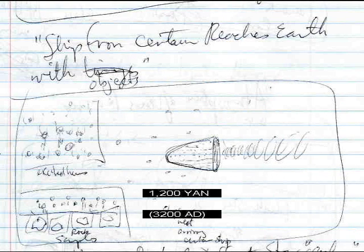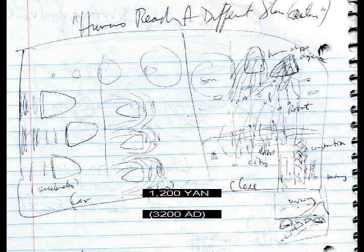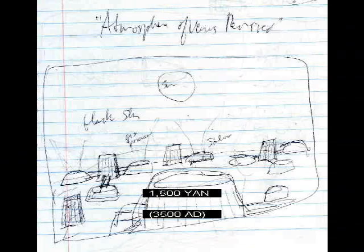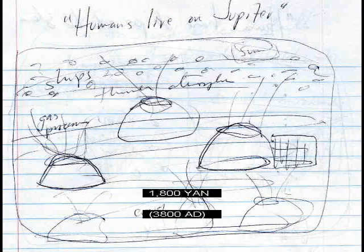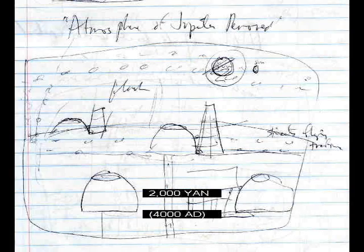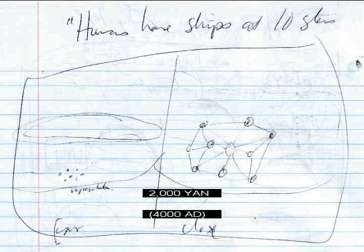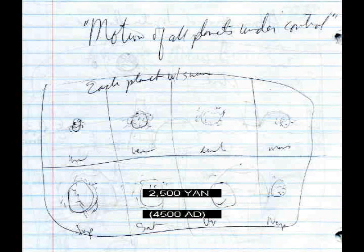Ship from Centauri reaches Earth with objects. Humans reach a different star — Centauri. Atmosphere of Venus removed. Humans live on Jupiter. Atmosphere of Jupiter removed. Humans have ships at 10 stars. Motion of all planets under control.